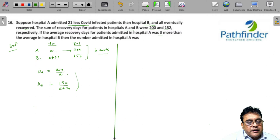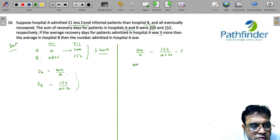So let me write that equation down. 200 upon A minus 152 upon A plus 21. So now if you have to solve this equation, 200 into A plus 21 minus 152A is equal to 3 into A into A plus 21.